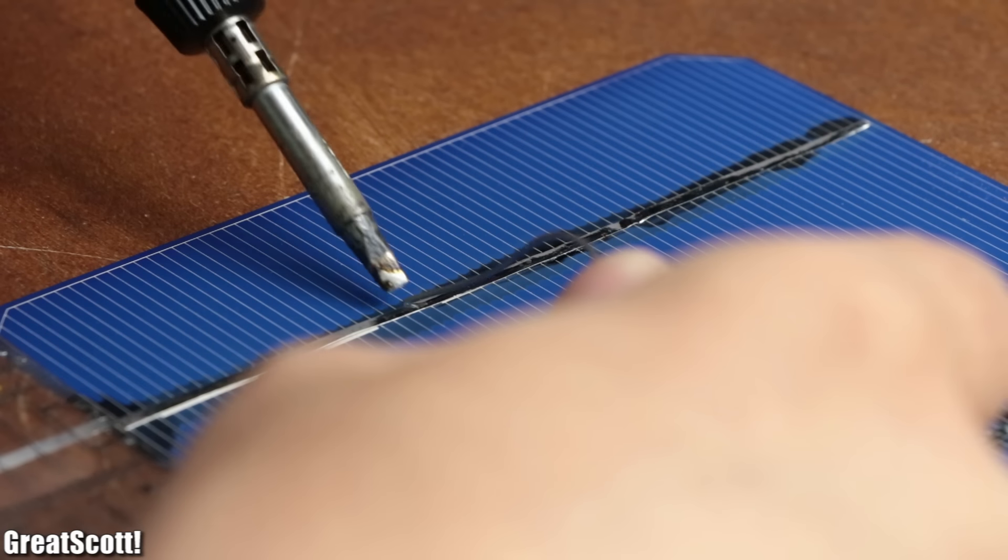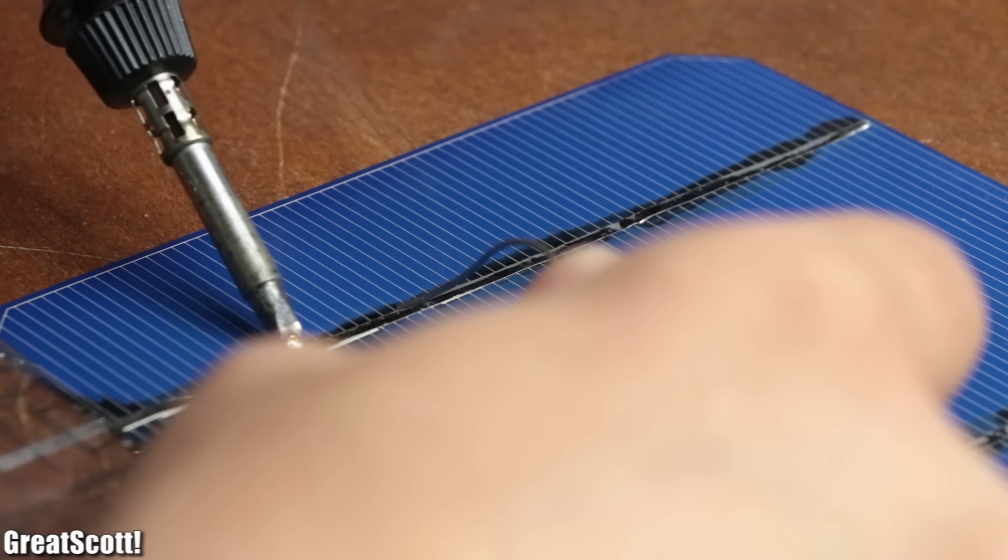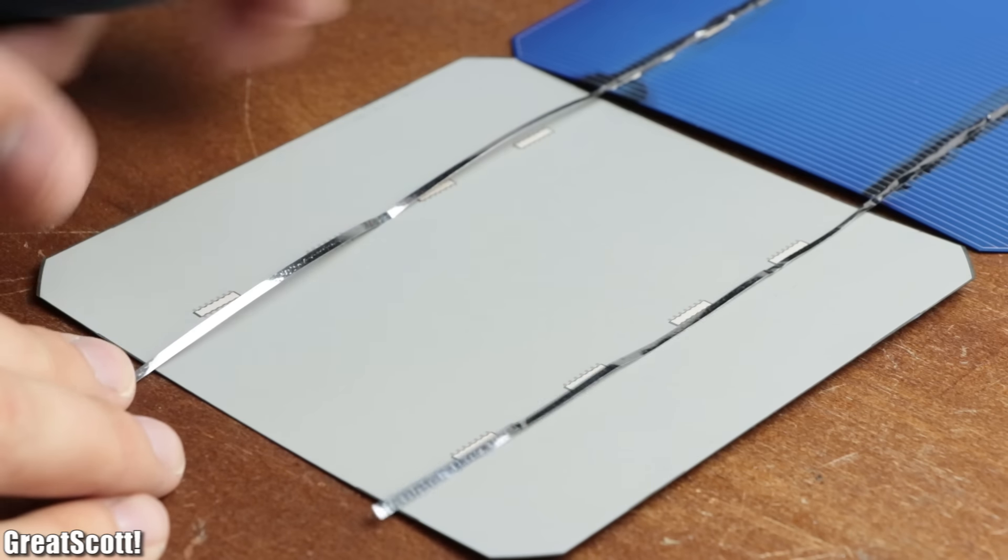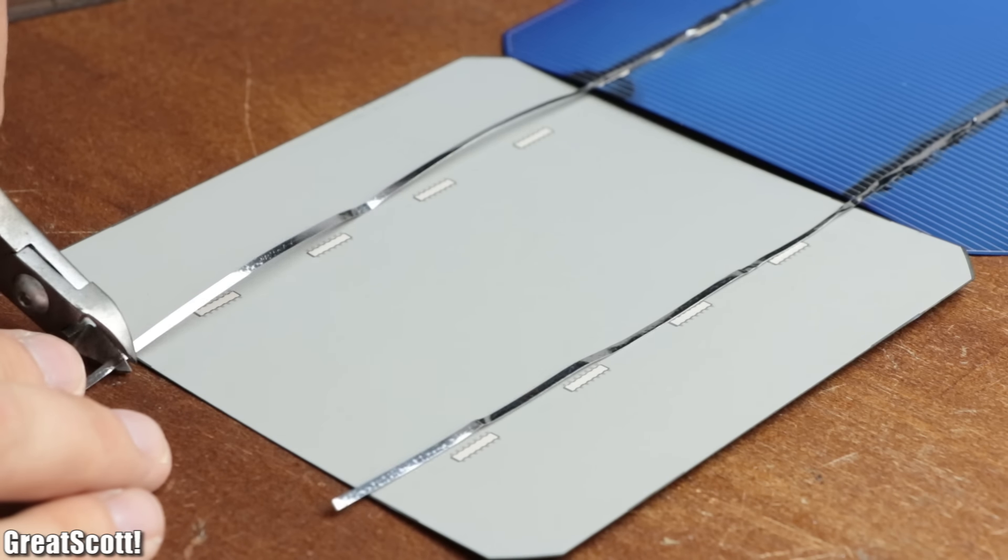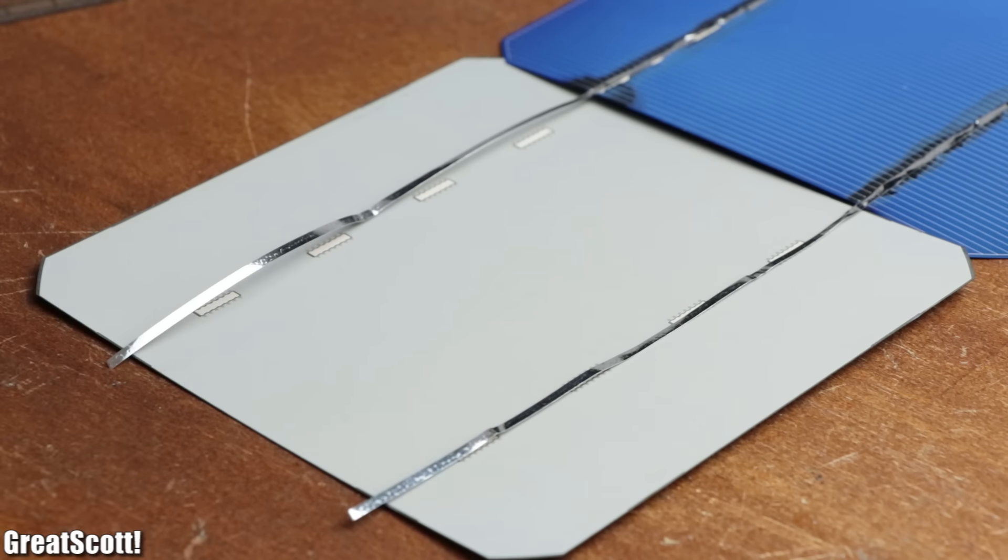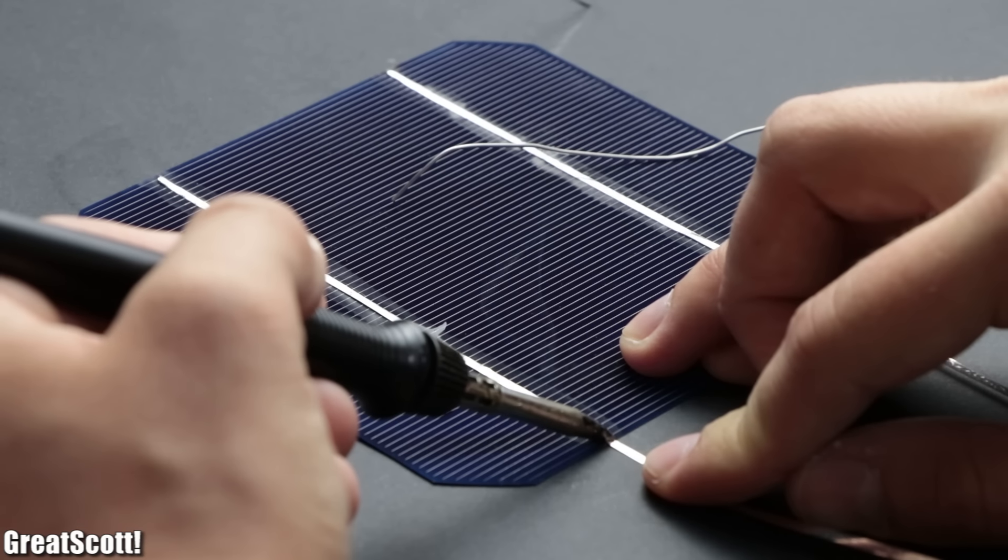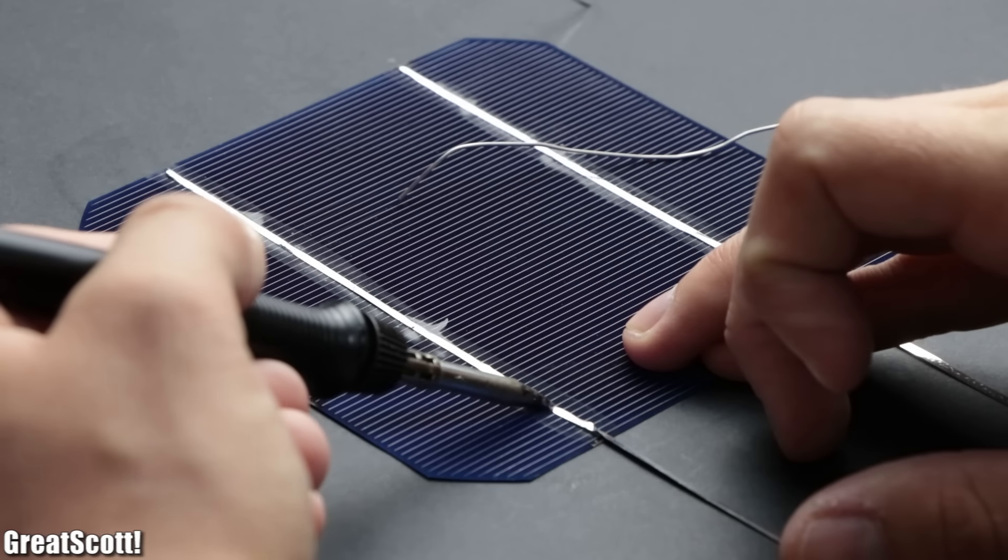Make sure to keep the wire straight and flat with the surface. Leave a length of about another solar cell of the tapping wire before cutting it. Repeat this process 36 times and try to not lose your mind while doing so.